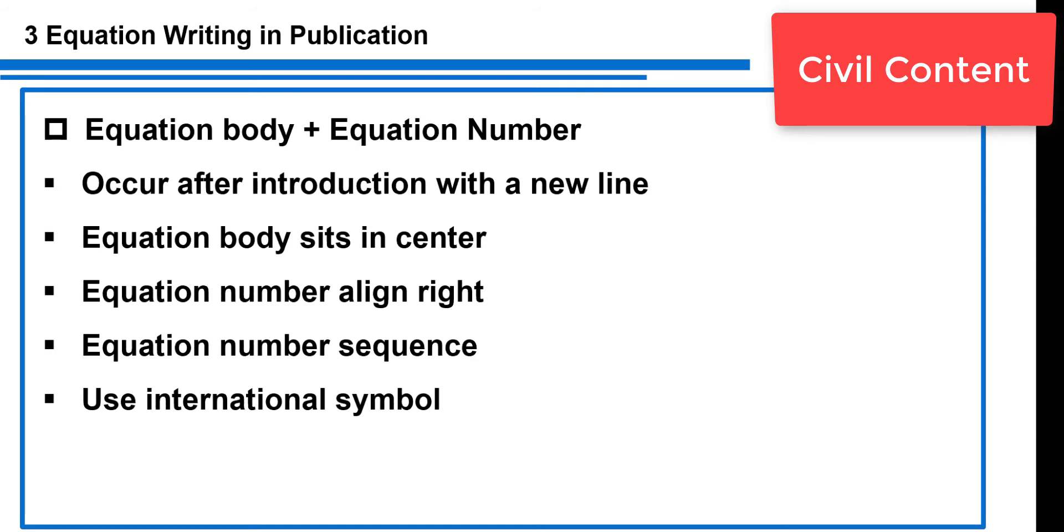Next part is equation body plus equation number. I think all of you are familiar with this part because we introduced a lot of information about this in the first section. But here's something I have to highlight: equation body and equation number should occur after introduction with a new line, with no blank line between them. Equation body should sit in the center—sometimes they're aligned on the left, sometimes in the center, based on the criterion from the journal or your thesis requirement.